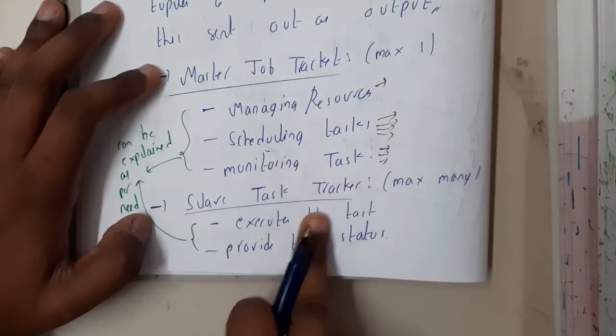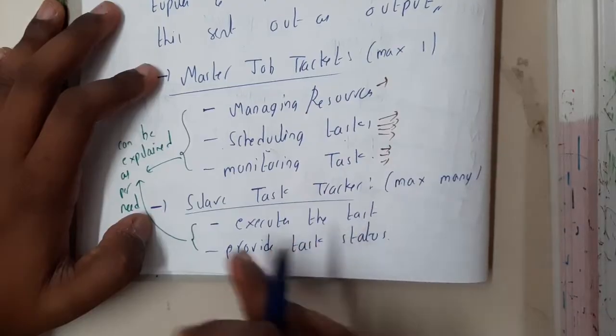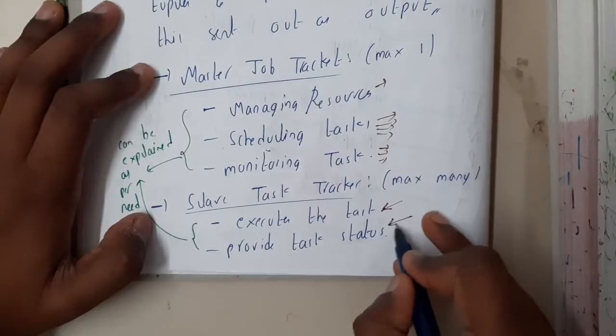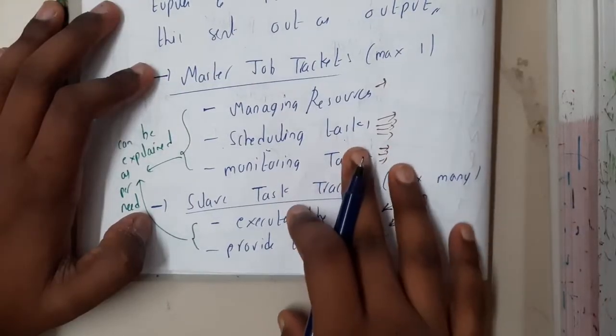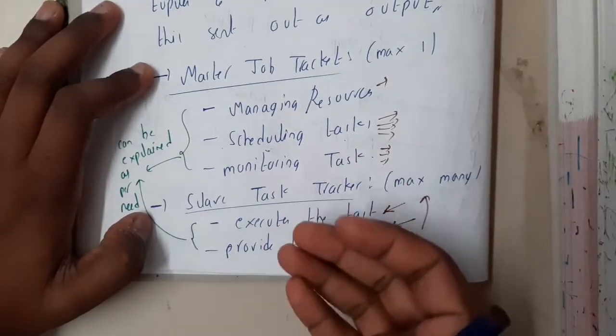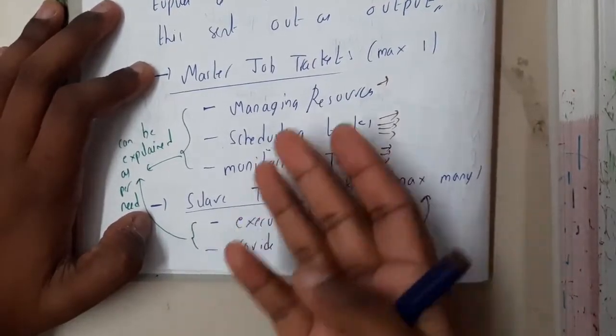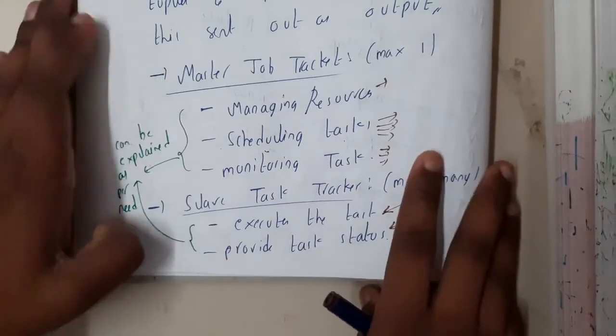Slave task trackers—we'll have many as we have many slaves. They will be executing the tasks and sending the status. The master should not waste time going to each process to ask about the status; the slaves should send it. That is what the slave trackers do.